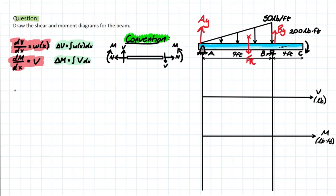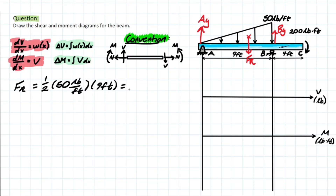How do we find FR? Since it's triangular, we take half, multiply by the peak of that distributed load — which is 50 pounds per foot — and multiply by the span it covers, which is nine feet. Solving that, we're left with 225 pounds.